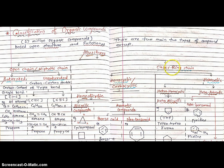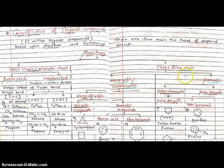The second type is closed chain or ring chain hydrocarbons. These ring chain or closed chain hydrocarbons are further classified into two main types: one is homocyclic or carbocyclic hydrocarbons, and second is heterocyclic hydrocarbons.